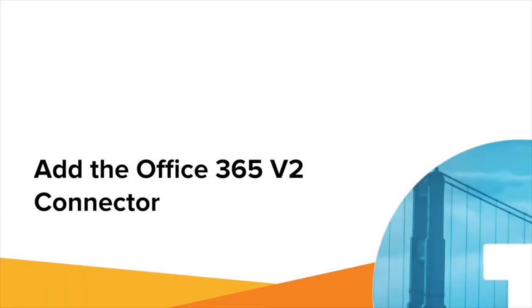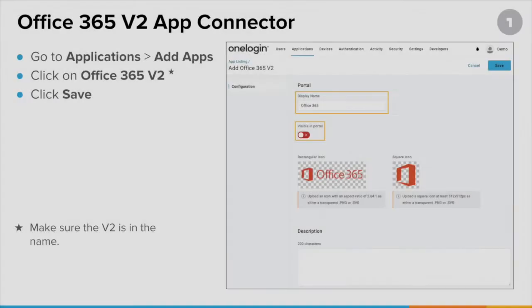Let's get down to the how-to's. First, we need to add the app connector itself. Once you have answered all the previous questions and ensured that you can enable Office 365 for single sign-on, and you know which of your domains you want to federate, you can add the app connector. Most importantly, make sure you add the app connector called Office 365 V2. The V2 is crucial — do not choose the one that just says Office 365.